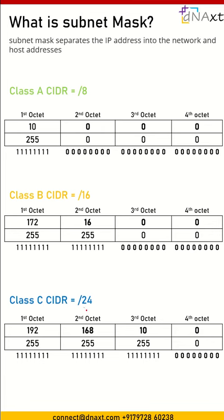Class C default subnet mask is slash 24. When I say slash 24, it means in the first octet we have 8 bits, from the second octet we have 8 bits, and from the third octet we have 8 bits — 8 plus 8 plus 8 equals 24. The fourth octet has all bits set to 0, meaning the subnet mask is 255.255.255.0.